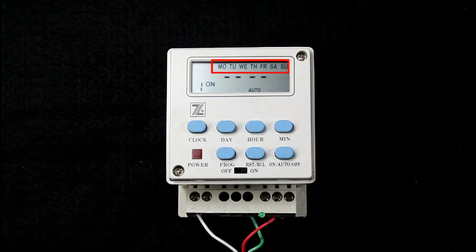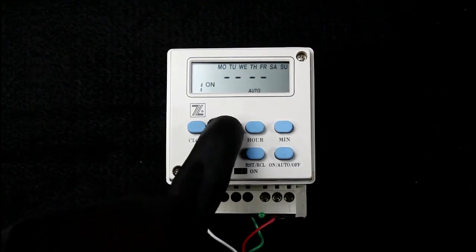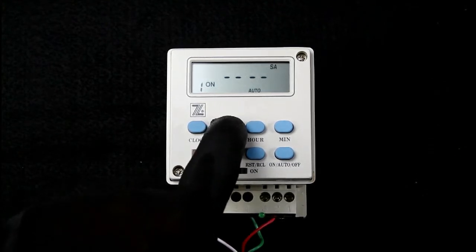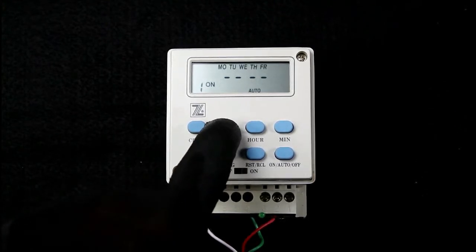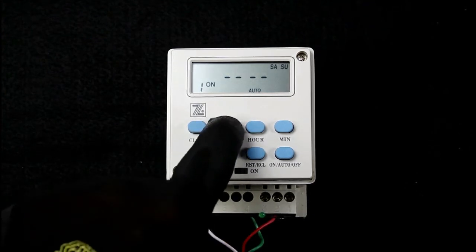These are the days of the week. By default, all seven days of the week are active. Press the day button to cycle through the day of the week, the weekdays only, the weekend only, and back to the seven days of the week.